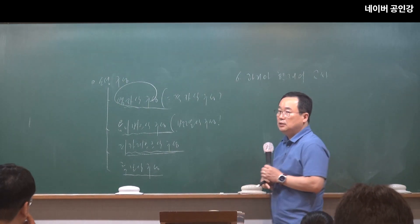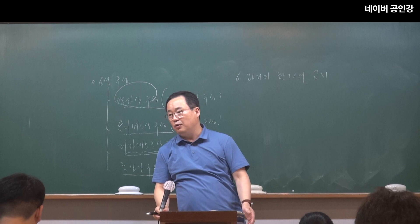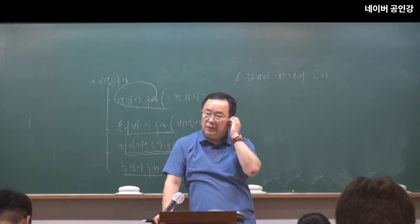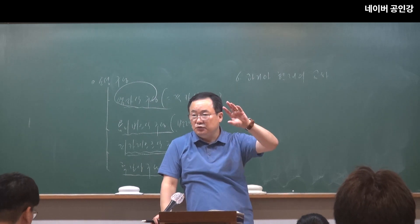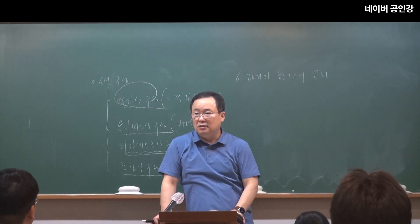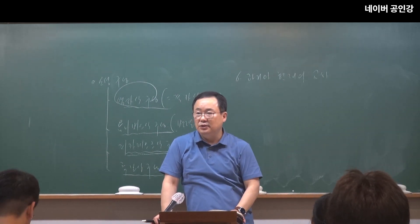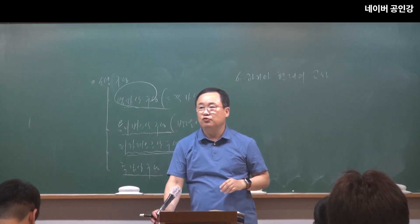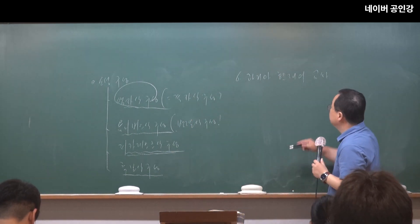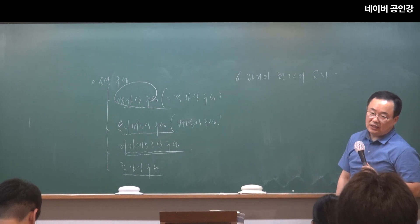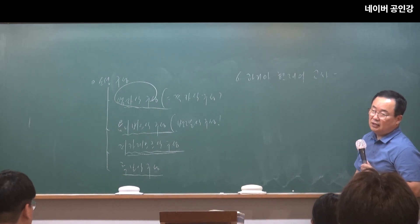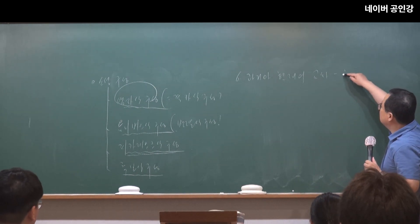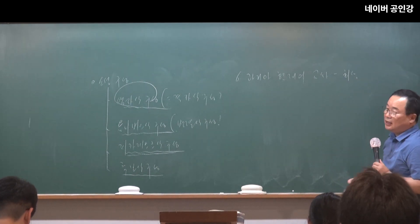여섯 번째로, 서술상의 특징을 묻는 문제에서 '과거와 현재의 교차'가 나올 때가 있습니다. 이것은 시에서도 잘 나와요. 현재 속에서 과거로 들어갔다가 다시 현재로 나오는 회상 형식입니다.